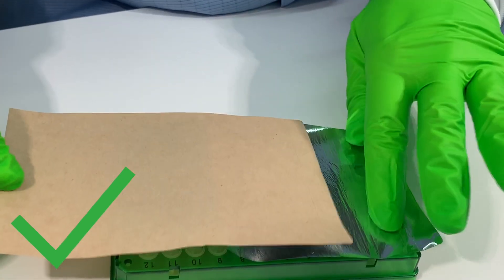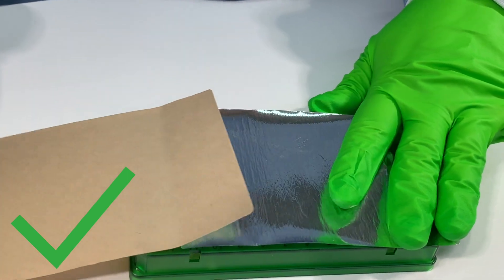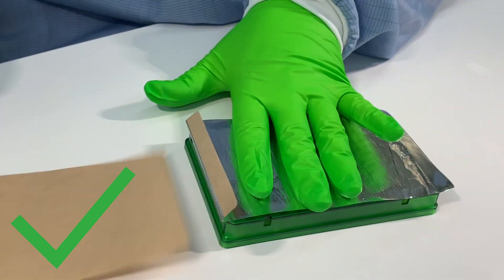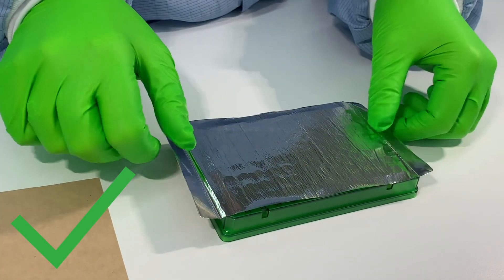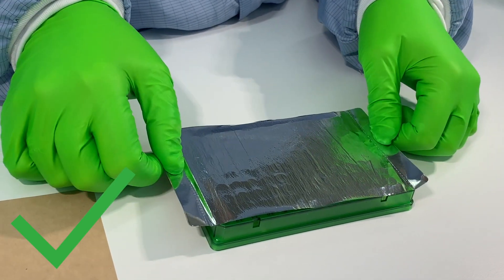Press the seal down on the sticky side, then remove the protective seal by pulling it over the other edge of the plate. There should now be non-sticky wings on both sides.